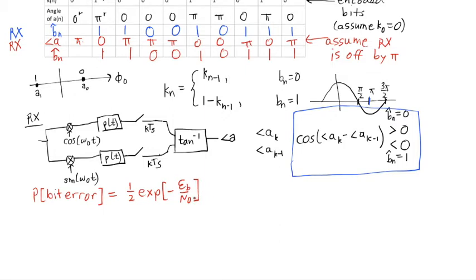And see, just like the non-coherent FSK, where we had to deal with a non-coherency in the receiver, I ended up with an exponential for differential BPSK, or just DPSK. Okay, we end up with this expression for the probability of error.